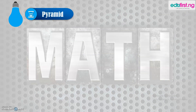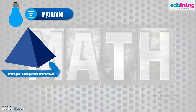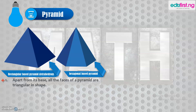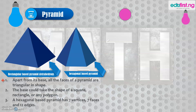Next on the list is what we call a pyramid — like the Egyptian pyramid. We have a rectangular-based pyramid, also referred to as a tetrahedron, and also a hexagonal-based pyramid. Pyramids exist in various forms; we could have a square-based pyramid or one with a polygon of any number of sides as the base. Apart from its base, the other faces of a pyramid are triangular-shaped. The base could be a square, a rectangle or any polygon. A hexagonal-based pyramid has seven vertices, seven faces and 12 edges.